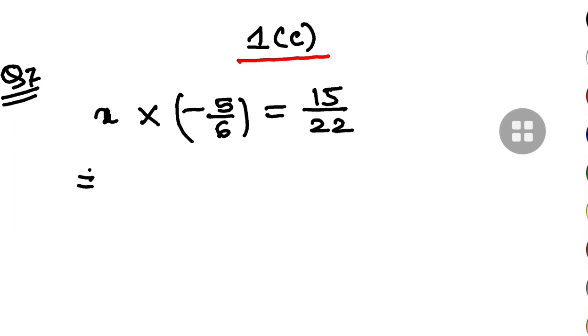So from here I have to find the value of x. So x will be 15 by 22 into minus 6 by 5. Obviously you know this. So now 5, 15, 3 times,